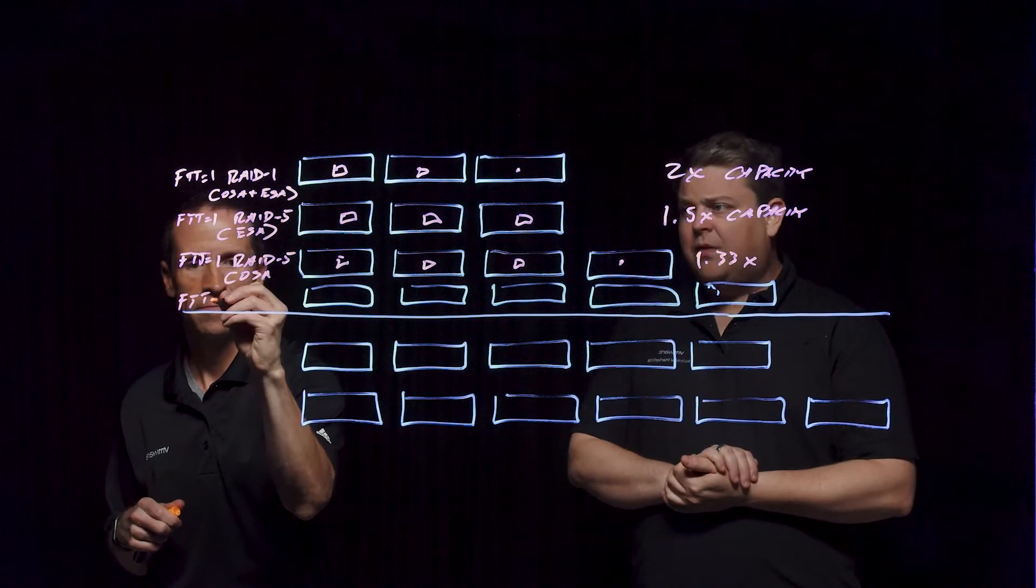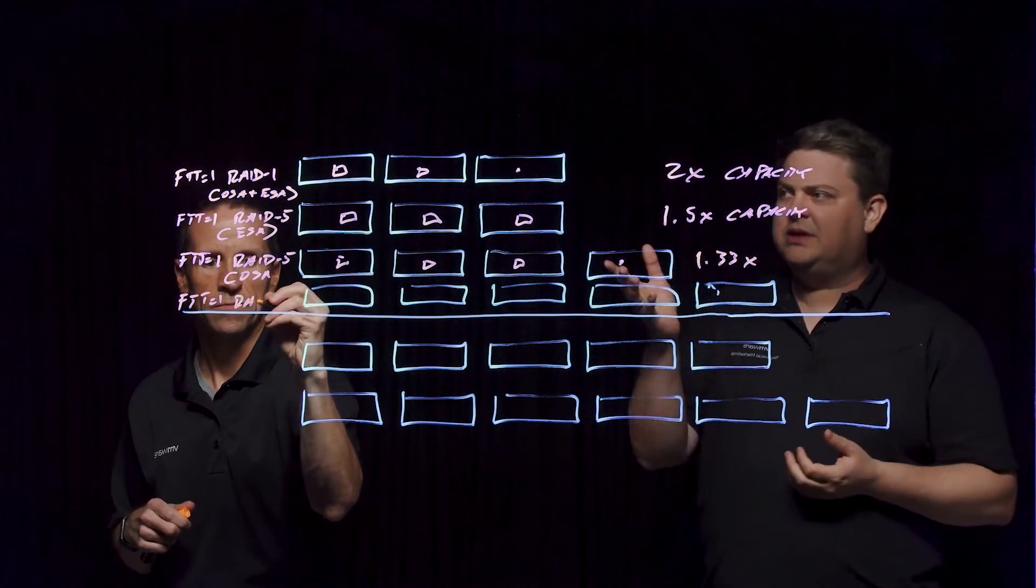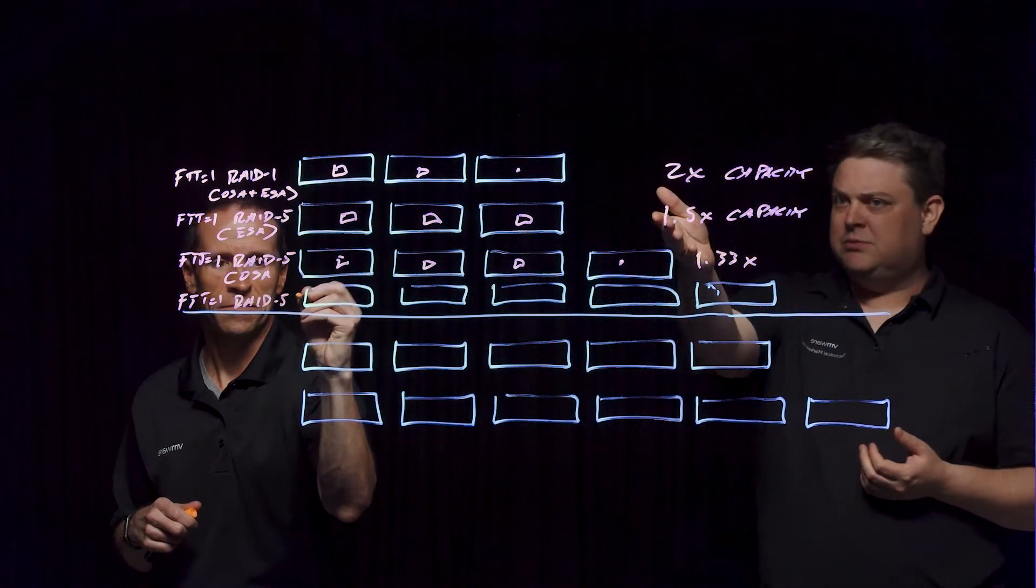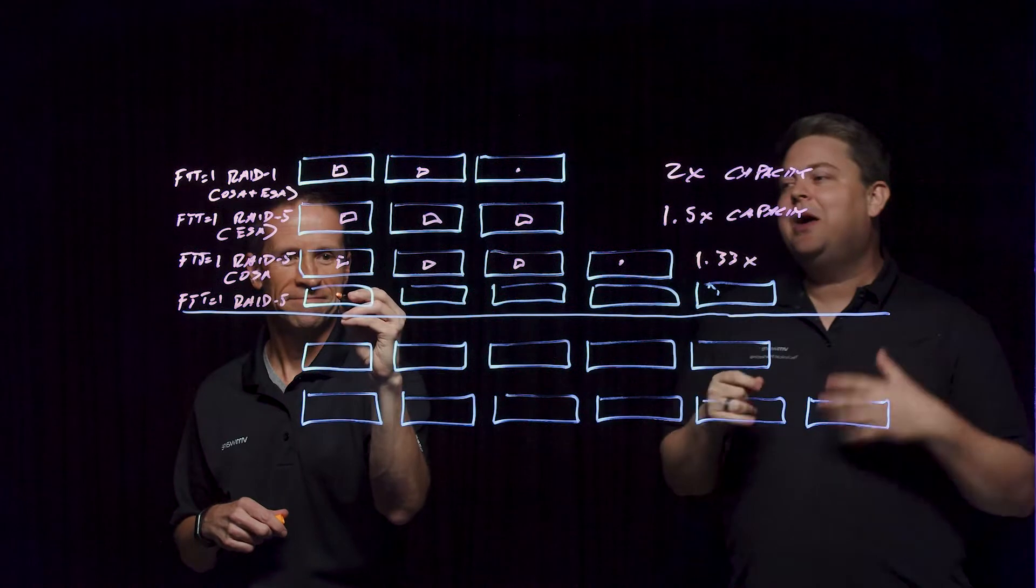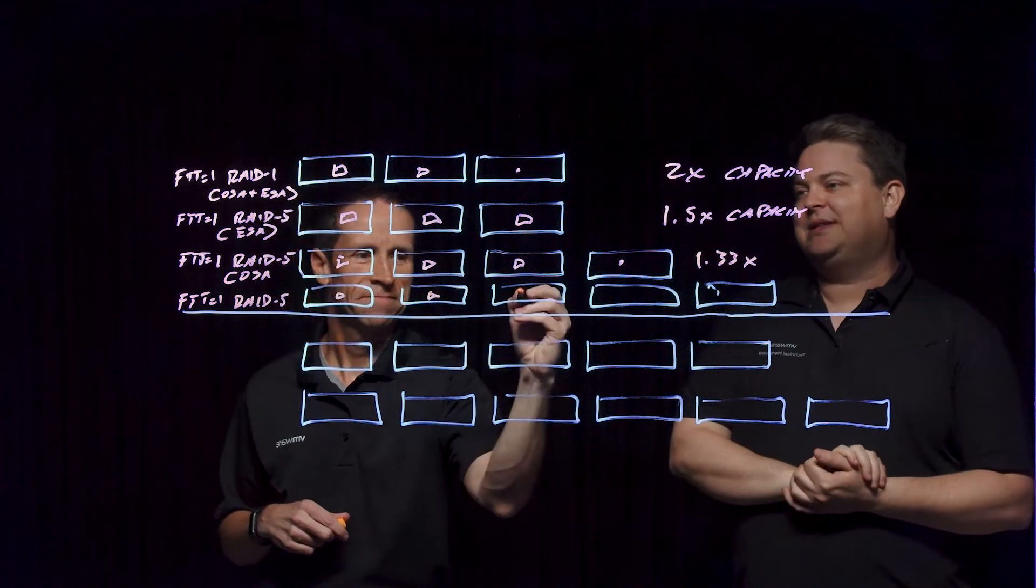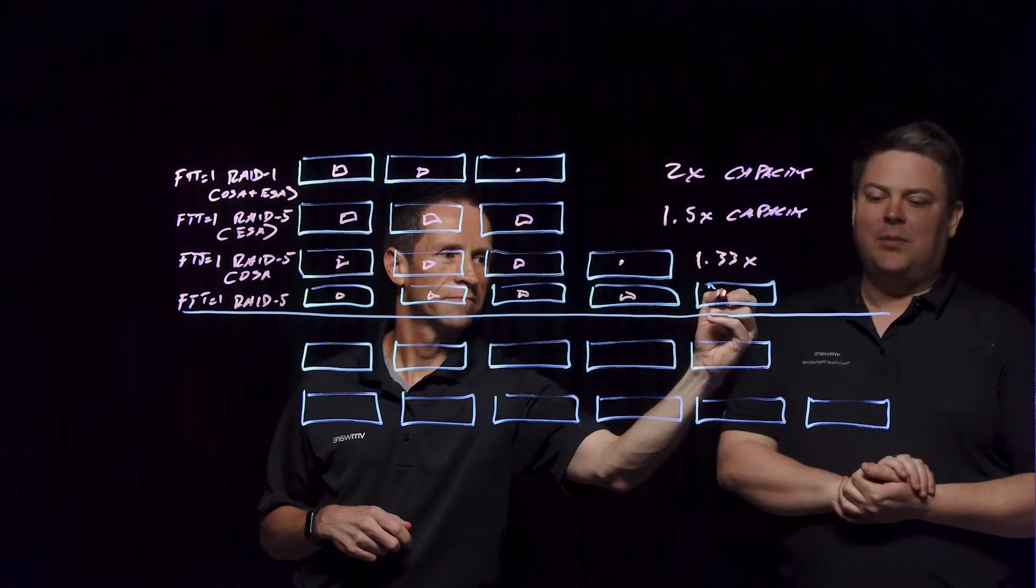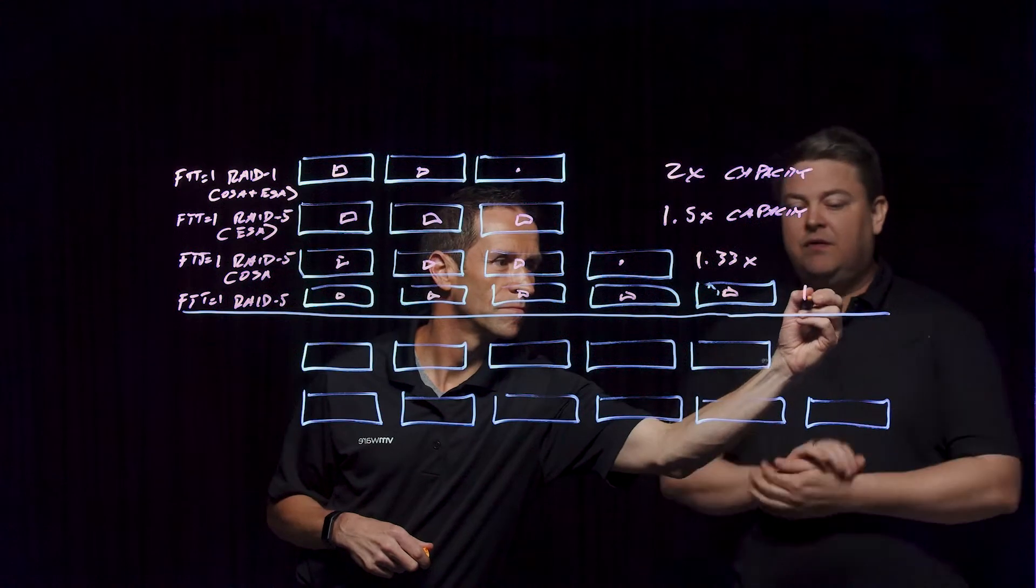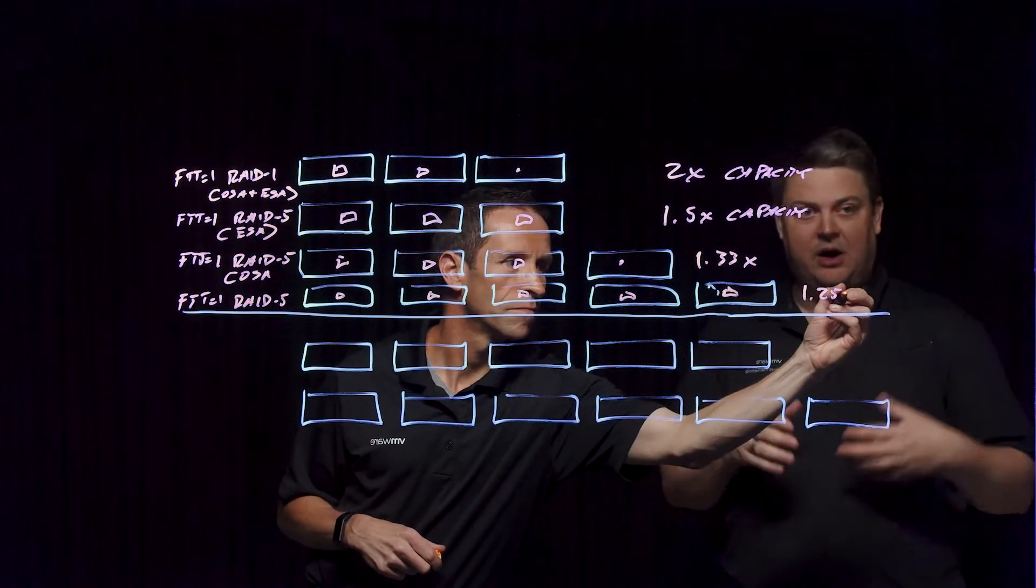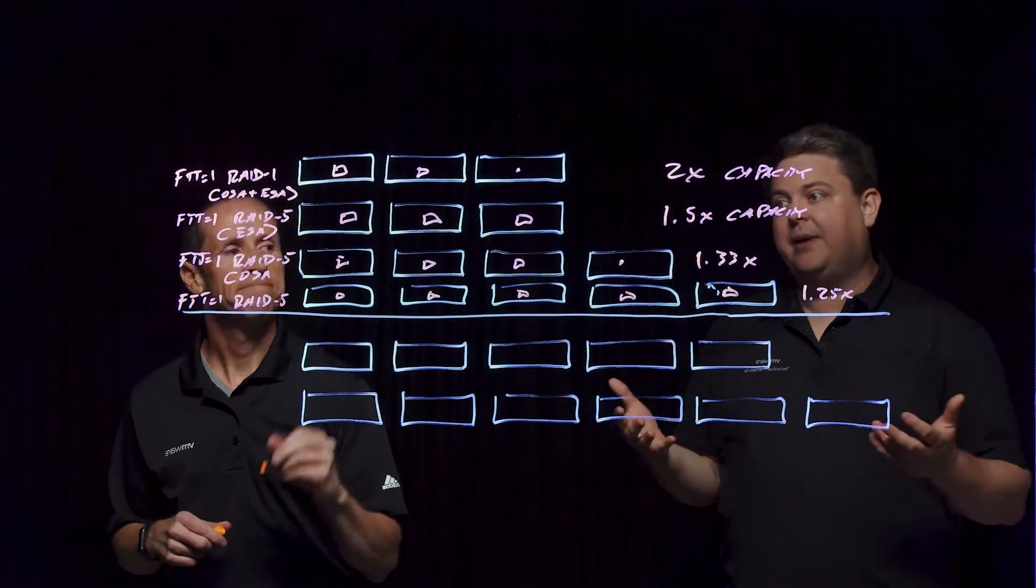Now from a RAID 5 perspective with the ESA, you may have looked and said, well, this is more capacity overhead than the old system. Why? Well, we actually have a dynamic system. So as that cluster grows and you add enough hosts, we actually have a 4 plus 1 design. And this actually has a 1.25x capacity overhead. So again, 100 gigabyte VMDK is going to be 125 gigabytes under this.